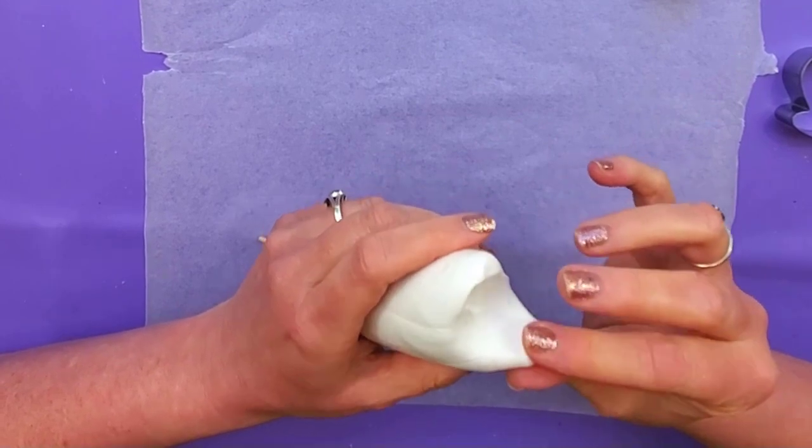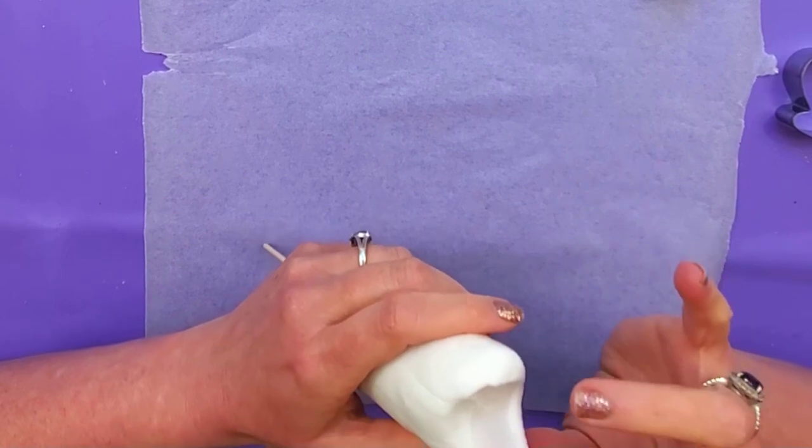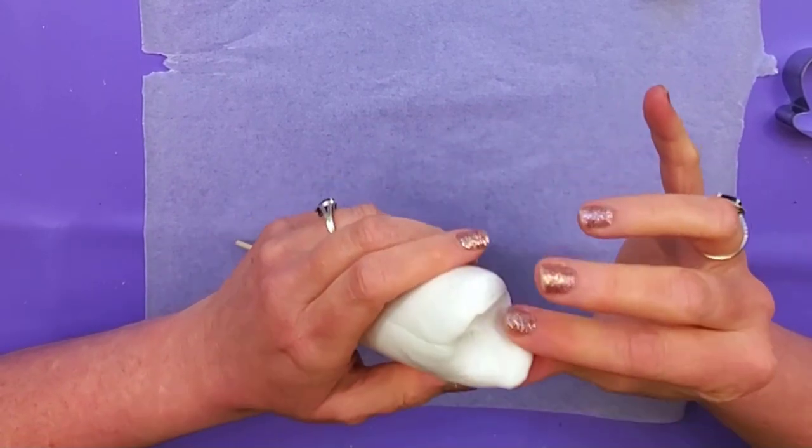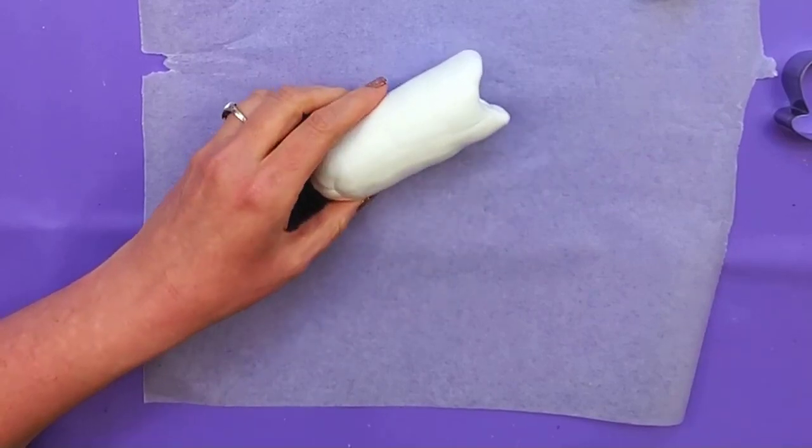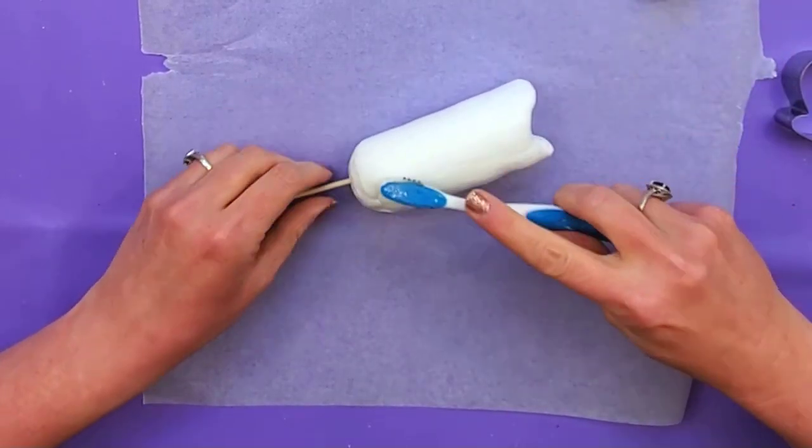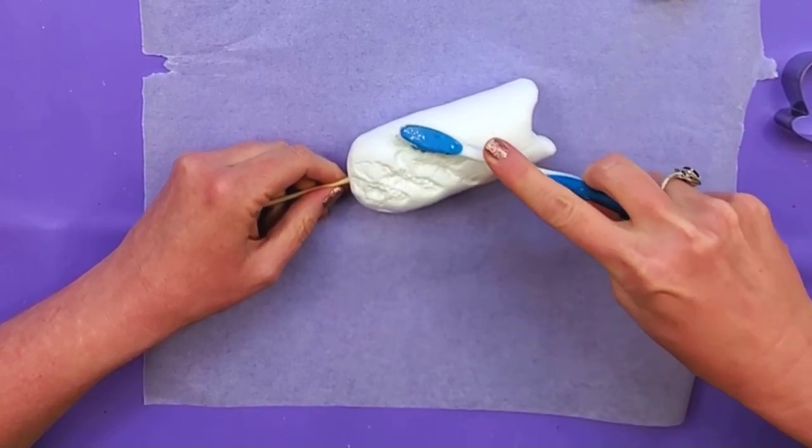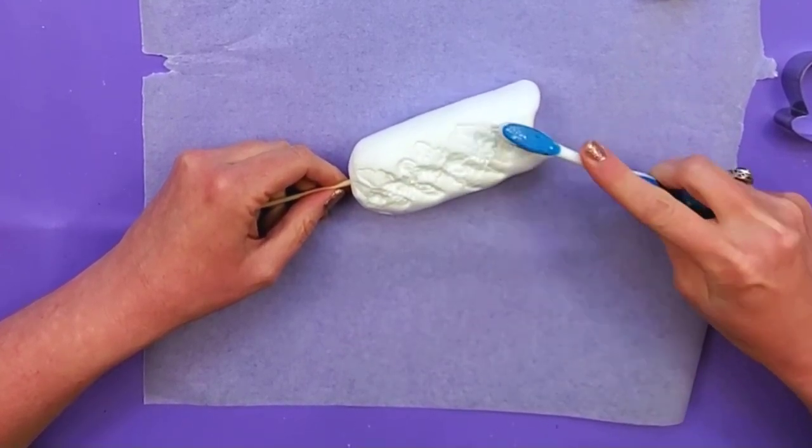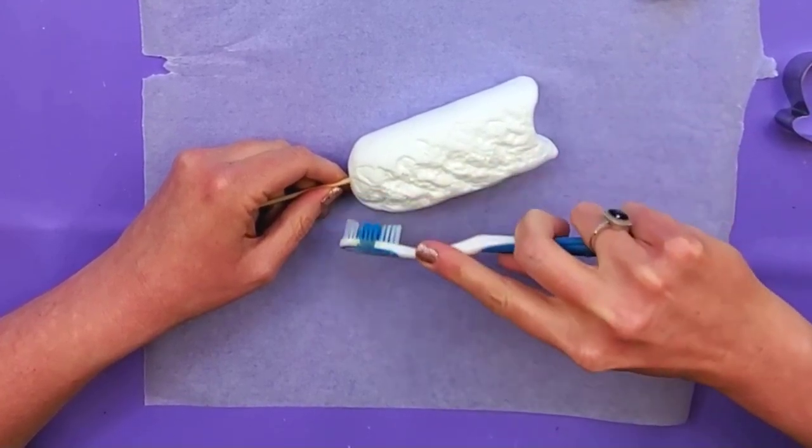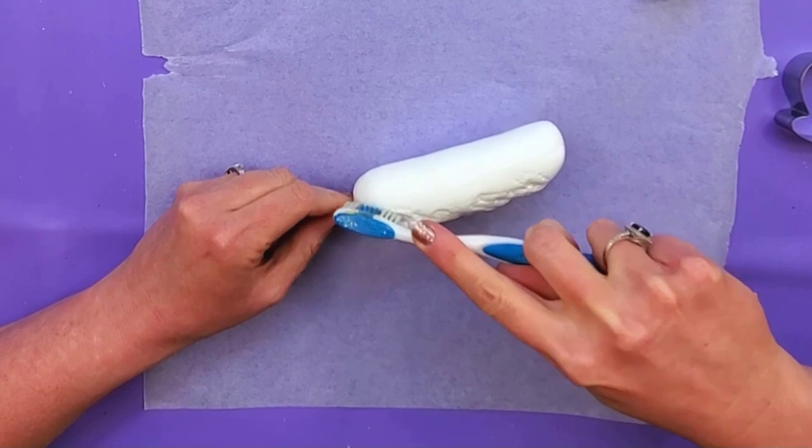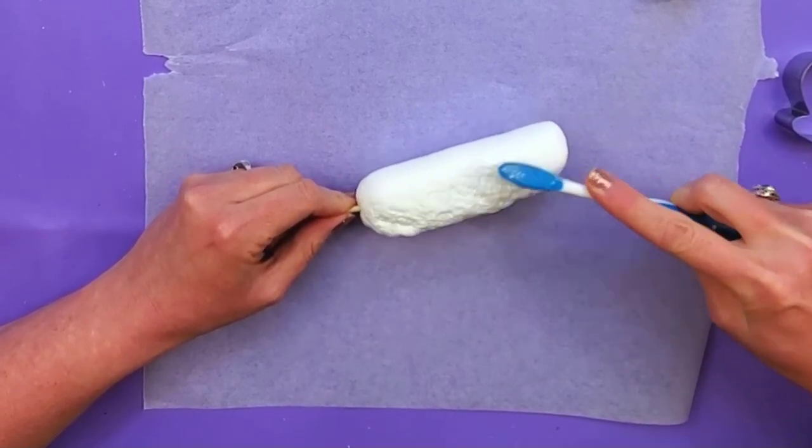Okay, so first I'm gonna texture the outside of this. I'm gonna use a toothbrush and I'm just gonna press in kind of hard because this foam clay doesn't like to hold the texture that much. And these corn dogs are pretty textury, so I want to make sure I get a nice texture on there.